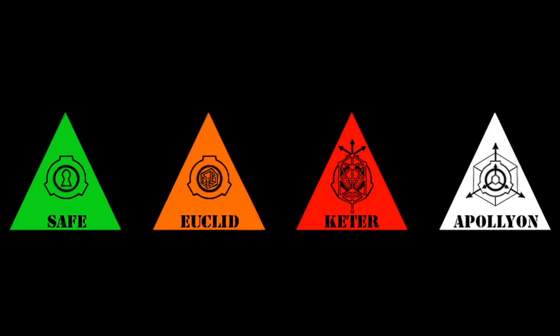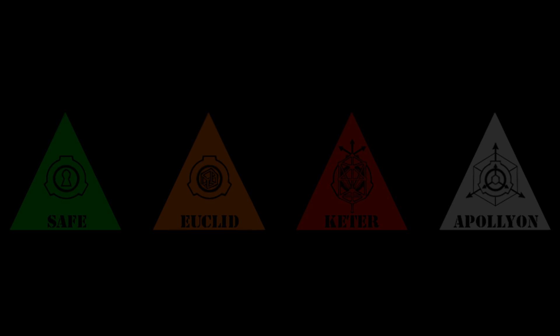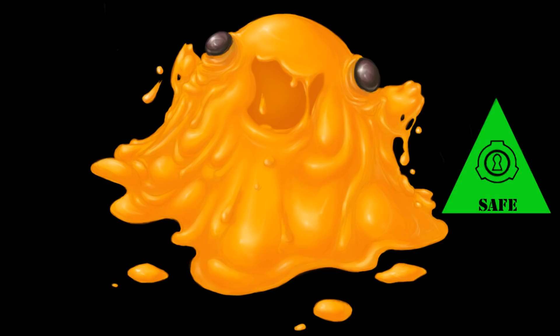Primary classes are the most common object classes used in SCP articles and make up the bulk of the objects. Safe class SCPs are anomalies that are easily and safely contained. This is often due to the fact that the Foundation has researched the SCP well enough that containment does not require significant resources, or that the anomalies require a specific and conscious activation or trigger. Classifying an SCP as Safe, however, does not mean that handling or activating it does not pose a threat.